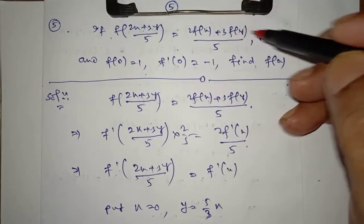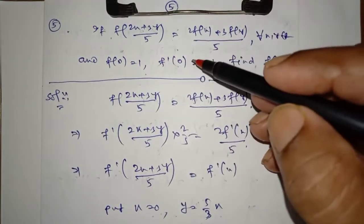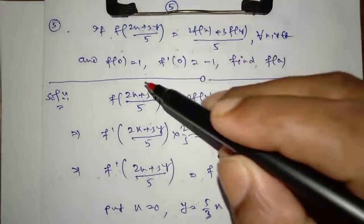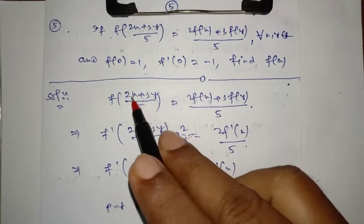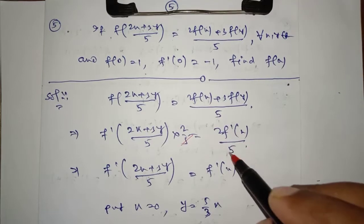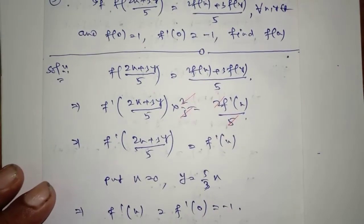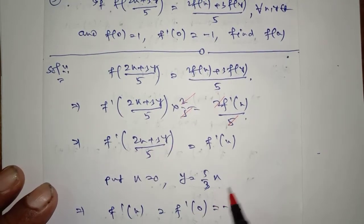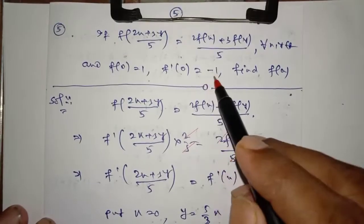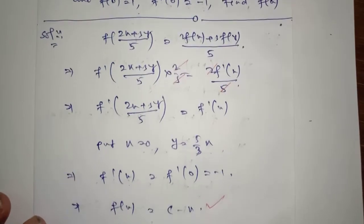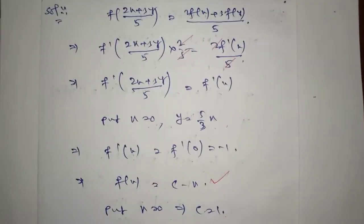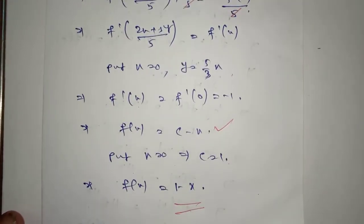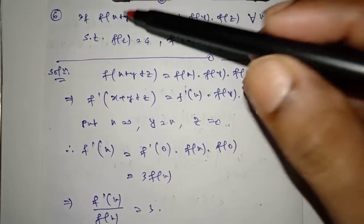Question 5: If f((2x+3y)/5) = ... for every x, y belongs to R, f(0) = 1, f'(0) = -1, find f(x). Jab bhi step ka question ho, differentiate karo with respect to x while y as a constant. So this gives (2/5)·f'(...) = (2/5)·f'(x) — the part cancels. Put x = 0, y = (5/3)x. So f'(x) = f'(0) = -1. Integrate: f(x) = c - x. Put x = 0: c = 1. So f(x) = 1 - x. This is very very important for JEE exam.